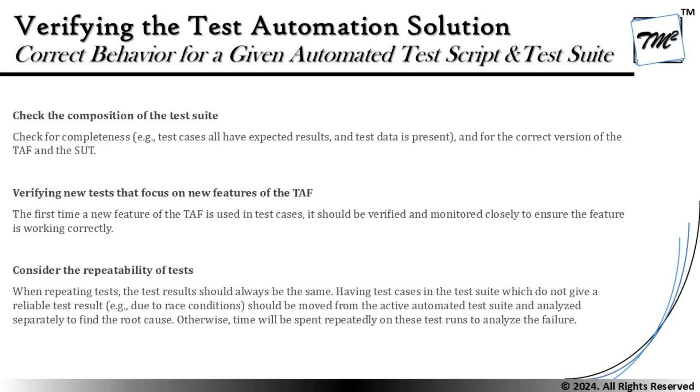The first component is checking the composition of the test suite, which means checking for completeness. This includes verifying that test cases have expected results, that test data is present, and that data corresponds to the correct version of the TAF and the SUT. Just collecting data is not enough — aligning it with the right scripts and execution is equally important.